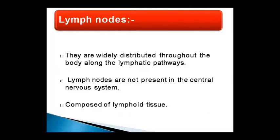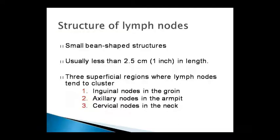Lymph nodes are widely distributed throughout our whole body, but they are not found in the central nervous system. They are made of lymphatic tissue and are small bean-shaped structures, similar to a kidney shape, about 1 inch in size. There are three superficial regions where lymph nodes cluster: inguinal nodes in the groin, axillary nodes in the armpit, and cervical nodes in the neck region.